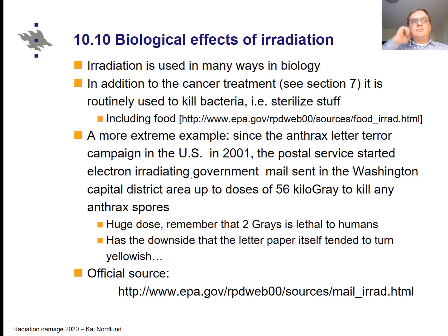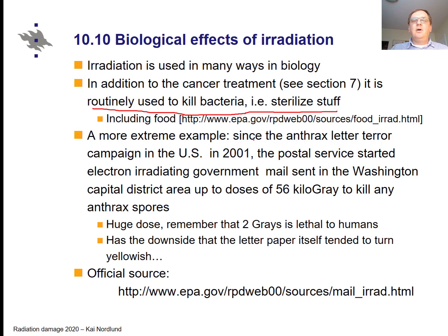There are also practical applications of biological effects of radiation. Section seven covered cancer treatment so we don't repeat that. Another use of radiation is to kill bacteria — that is, to sterilize. Typically electron or gamma irradiation is used for sterilization, and this is quite routinely used in the food industry. Plasma treatment is also used to sterilize medical equipment.